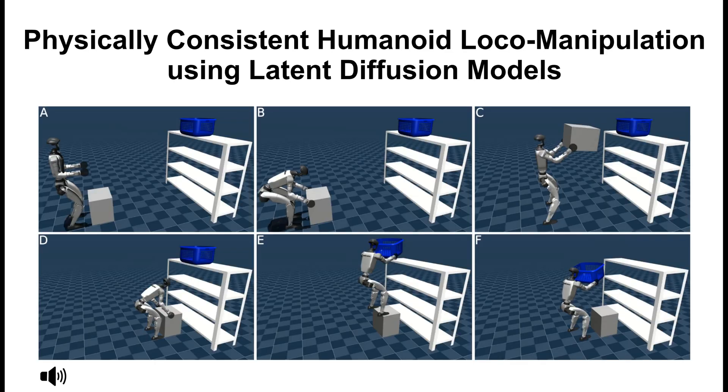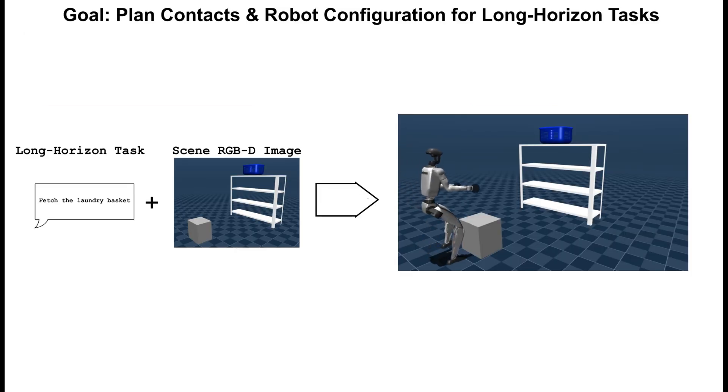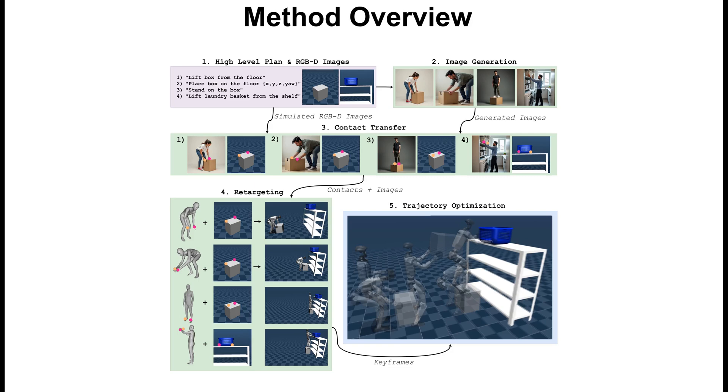We present our work titled Physically Consistent Humanoid Locomanipulation Using Latent Diffusion Models. We propose a pipeline that plans contacts and robot configurations to guide a long-horizon humanoid whole-body trajectory optimization. We use generative models to synthesize 2D human-object interactions that we can use as demonstration.